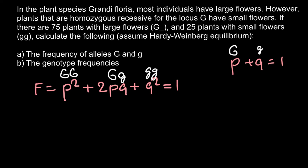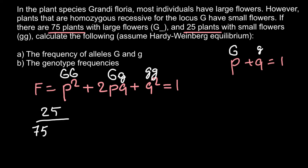To solve this problem we have to find the frequency of the genotype we know. We cannot find the frequency of the homozygous dominant or heterozygous genotypes directly because both produce the same phenotype, accounting for 75 plants. But we know for sure that we have 25 plants that are homozygous recessive, because those plants produce small flowers.